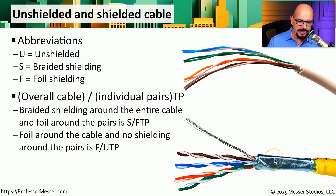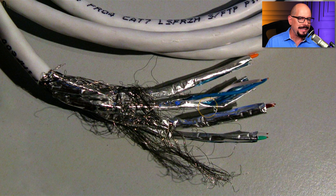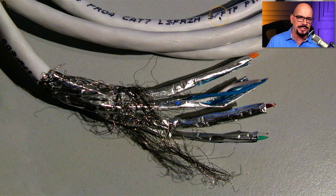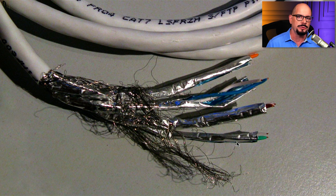Here's a cable where we can see the inside and the writing on the outside. You can see this is a Category 7 cable with text that says S/FTP — meaning all wires inside have a shield around them, and there's foil on each pair. Looking at the cable itself, we can see the shield around the outside, and we can see that each individual pair of wires does indeed have foil around it.